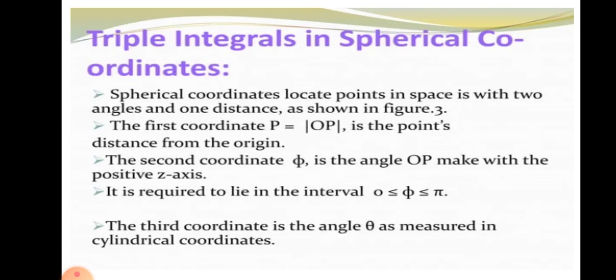Spherical coordinates locate points in space with two angles and one distance, as shown in the figure in the next slide. The first coordinate ρ is equal to the absolute value of OP, which is the point's distance from the origin. The second coordinate is the angle OP makes with the positive Z axis, required to lie in the interval 0 ≤ φ ≤ π. The third coordinate is the angle θ, as measured in the cylindrical coordinates.